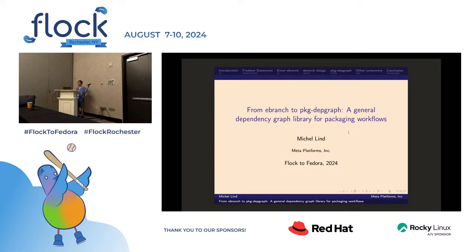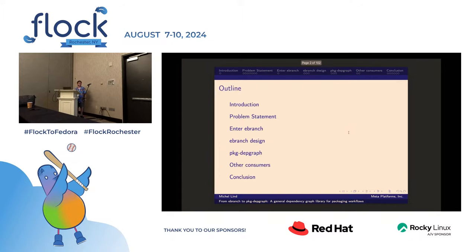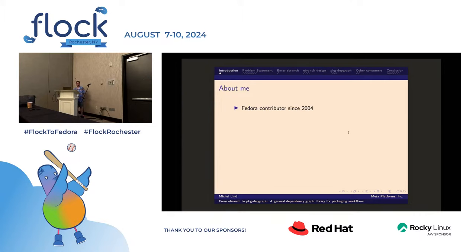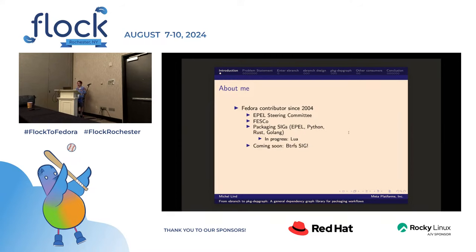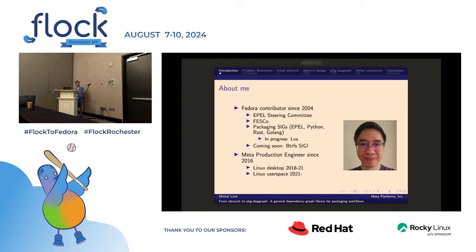Hello everyone, my name is Michel and I'm a Fedora contributor. I'll be talking about two tools: eBranch and PKG DepGraph, which will be a general dependency graph library. I've been a Fedora contributor for about 20 years. I've been on the EPEL steering committee for a while, and I'm a new member of FESCo, the Fedora Engineering Steering Committee. I'm in various packaging interest groups: EPEL, Python, Rust, and Golang. I've been working at Meta as a production engineer for the past seven and a half years.